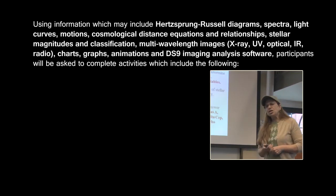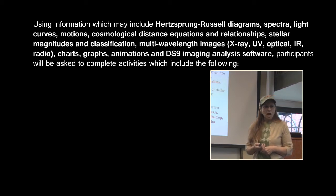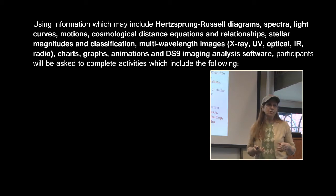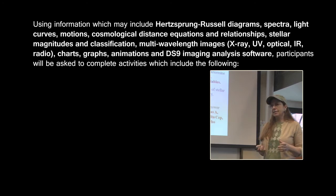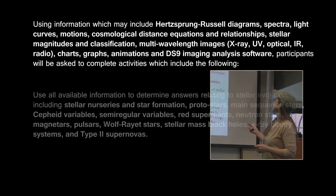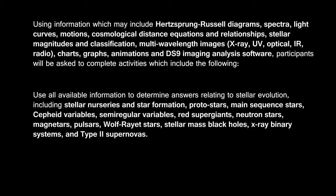This year, the topics are all related to stellar evolutionary sequences that end up with a Type 2 supernova event. Topics include Cepheid variable stars, irregular variable stars, red supergiants, pulsars, neutron stars, black holes, and the actual supernova event itself.